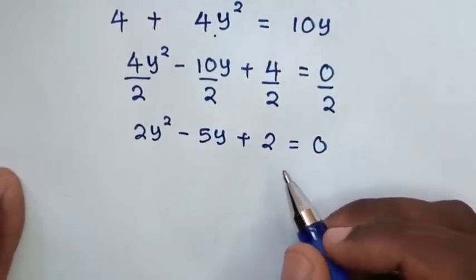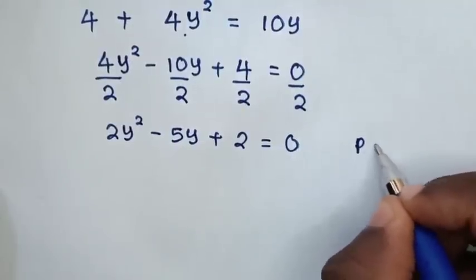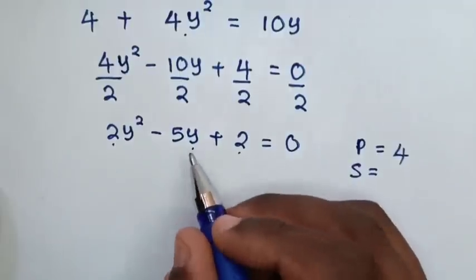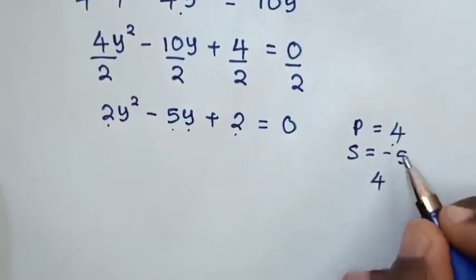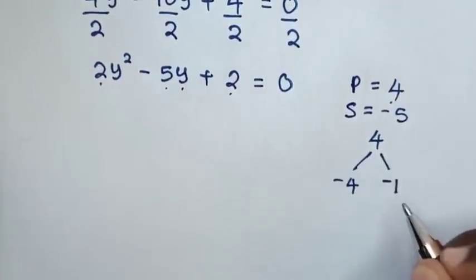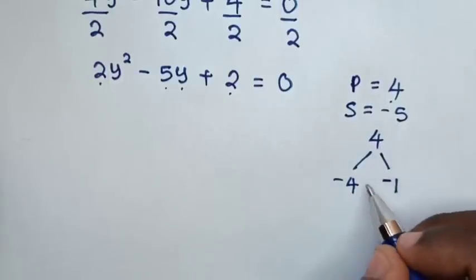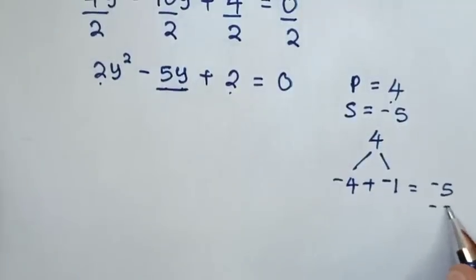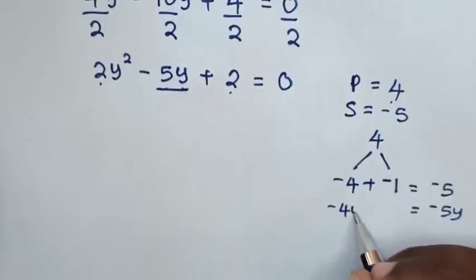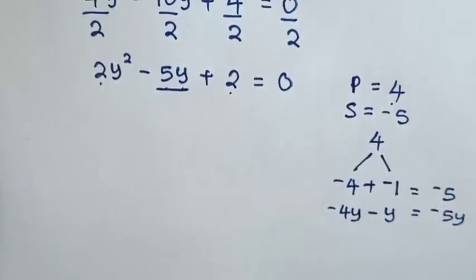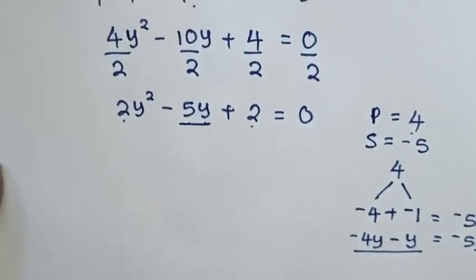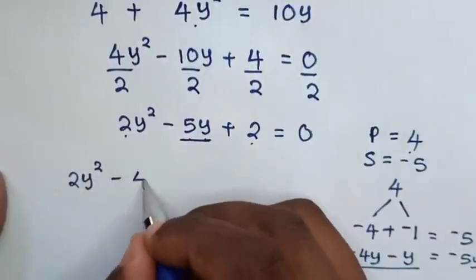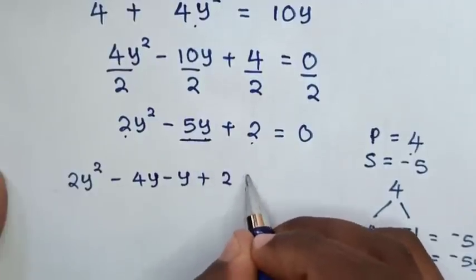We resolve this quadratic by factorization. The product of the coefficient of y squared and the constant is 2 times 2 equals 4, and the sum needed is negative 5. The two factors are negative 4 and negative 1, since their product is 4 and their sum is negative 5. So negative 5y splits into negative 4y minus y. Substituting, the equation becomes 2y squared minus 4y minus y plus 2 equals 0.